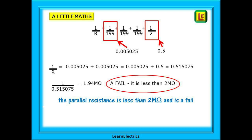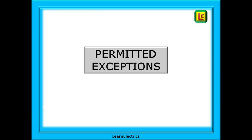Our parallel resistance is 1.94 megaohms. This is less than two megaohms and so the installation as a whole is a fail. Further investigation is required. Why is this last circuit so low? Is there a problem? Does it need rewiring? The more that you practice these calculations, the easier it becomes. There are some permitted exceptions to testing, but we shouldn't use a permitted exception just because we are lazy and want to shortcut the testing. If we can do the test, we should do the test.